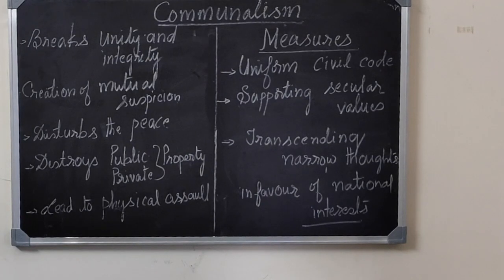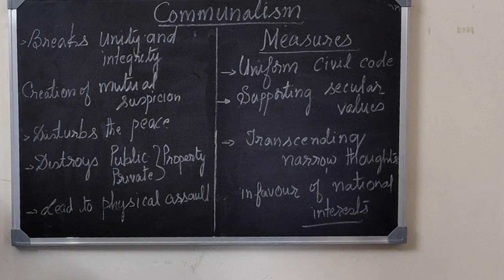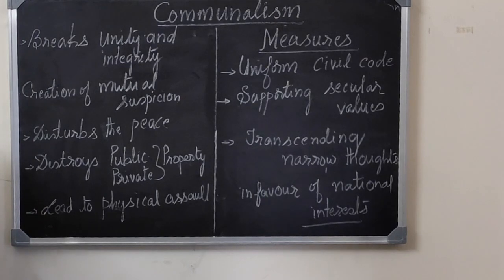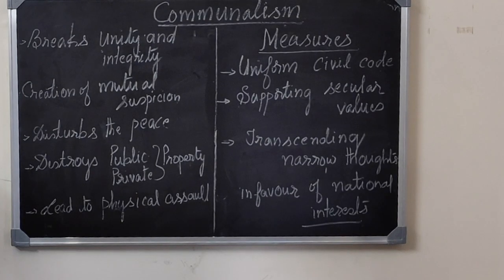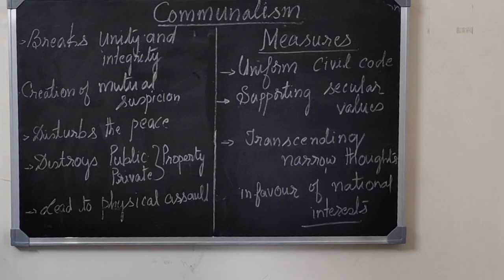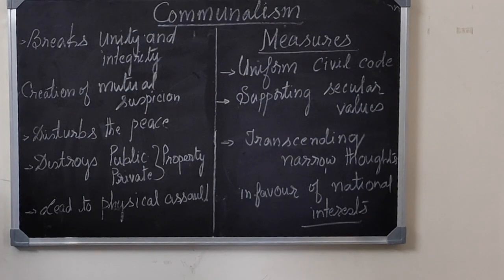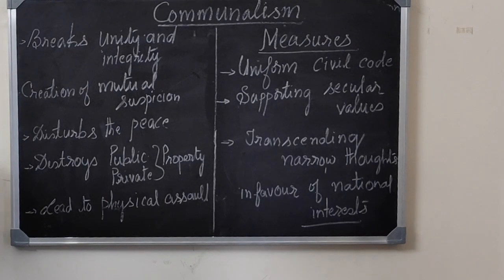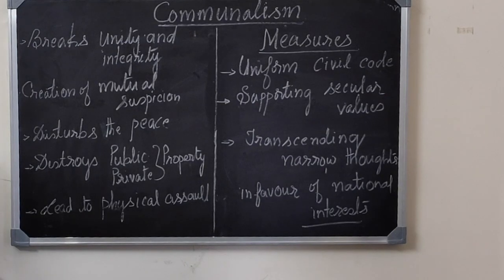How do we get rid of communalism? There are a few methods the government has taken. A uniform civil code where people of all religions are treated equally. Supporting secular values — religious freedom given to all people, so the religion of all people must be respected. Transcending, meaning development of broad-mindedness, so that when we are broad-minded, we can work in favor of national interests. Thank you, children.